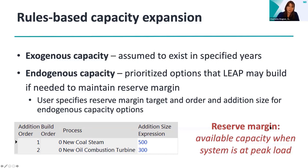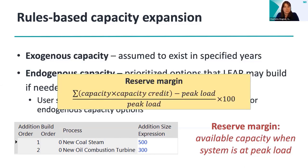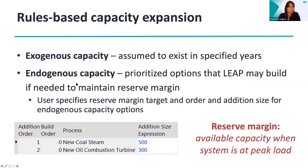In rules-based capacity expansion, exogenous capacity is how much capacity is assumed to exist in any given year — LEAP will not retire it unless told to. Exogenous capacity is typically used for existing plants and firm future capacity. Endogenous capacity is a set of prioritization options that allow LEAP to build capacity when needed to maintain the reserve margin. The user specifies the reserve margin, and the order and addition size for these endogenous capacity options. The reserve margin is the available capacity required to be maintained when the system is at peak load. LEAP calculates it by summing the product of capacity and capacity credit across modules, subtracting peak load, dividing by peak load, and multiplying by 100 to give a percentage.